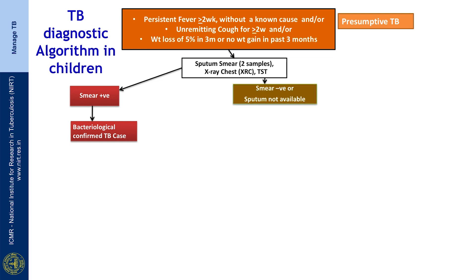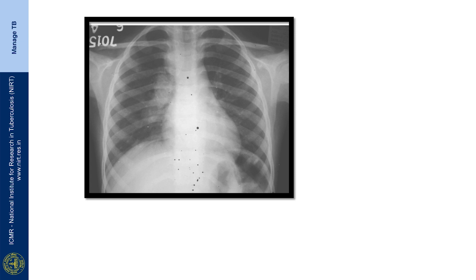However, if the smear comes negative, or the child is unable to give sputum due to dry cough or young age, it is the chest X-ray which will direct the next steps. In the chest X-ray, findings are classified into two sets. One is a chest X-ray which is highly suggestive of TB — remember, highly suggestive, not diagnostic of TB.